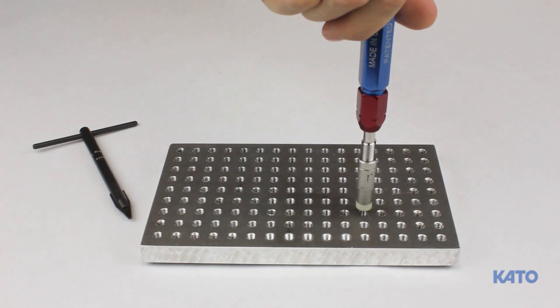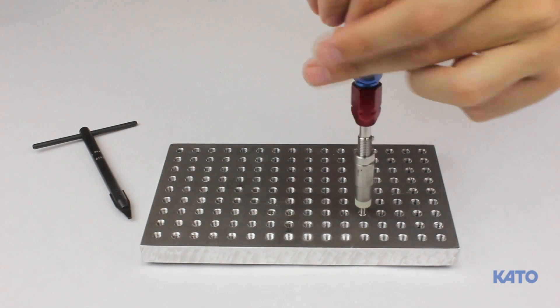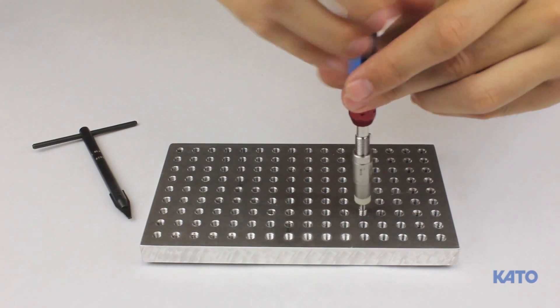Once that happens, thread the tool out by turning counterclockwise. The insert will simply thread out of the tapped hole without damaging the parent material or the hole.